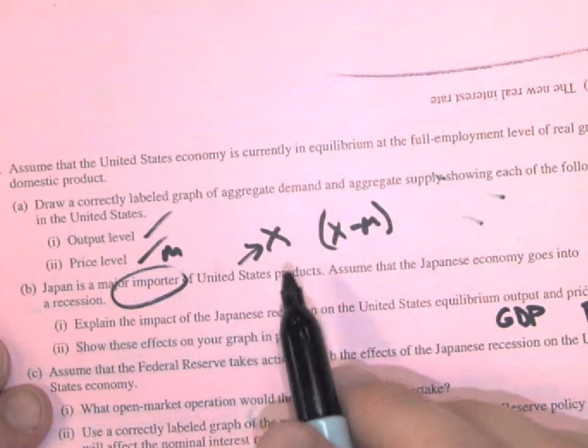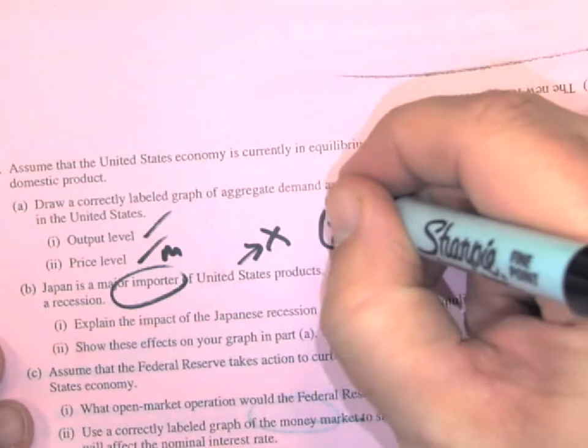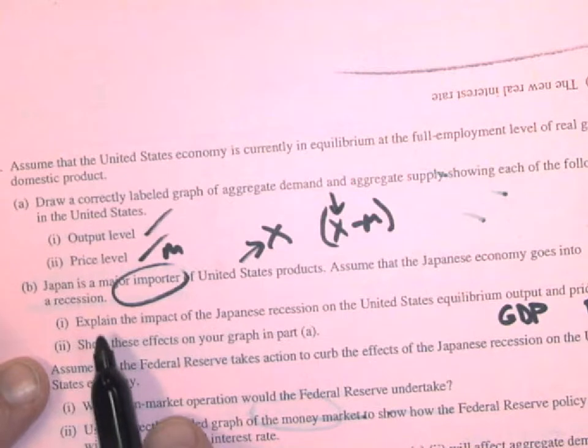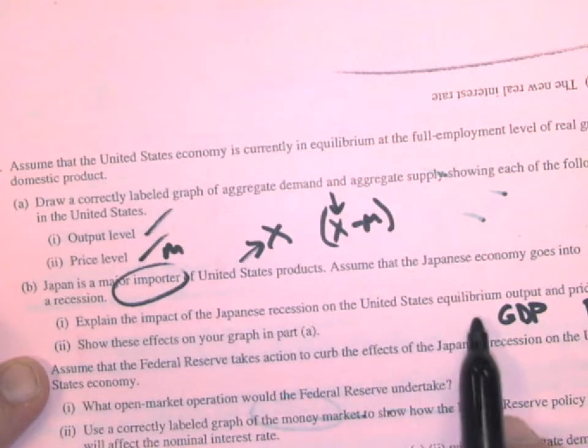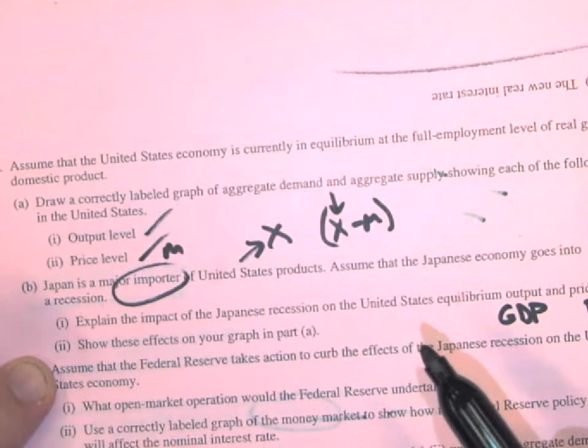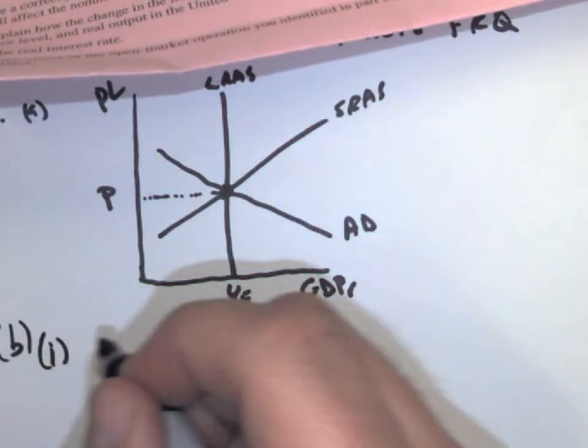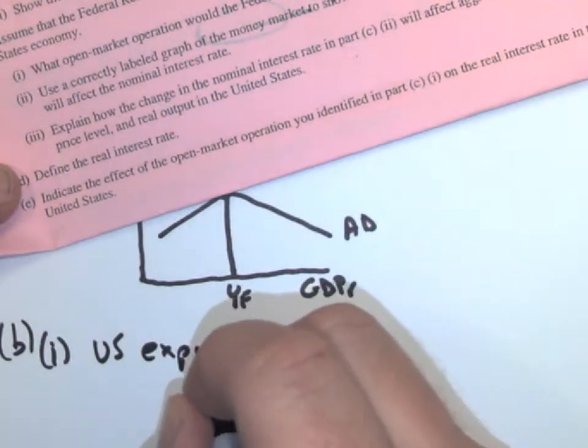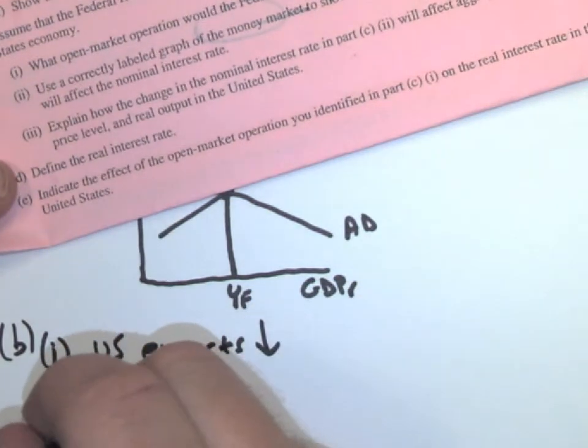So what are exports going to do if Japan is in a recession and they don't really buy our stuff? Our exports are going to decrease, aren't they? Because people in Japan aren't going to buy as much of our stuff. So first thing it says is explain the impact of the Japanese recession on the U.S. equilibrium. So if it says explain, it didn't say to draw anything yet, did it? So if I'm just explaining, I'm going to say on B and then I. I'm going to say U.S. exports will decrease. Okay, so that's as simple as that one can be right there.